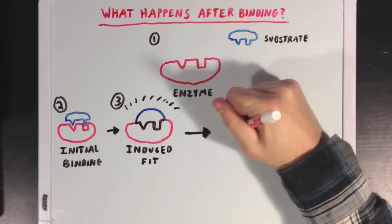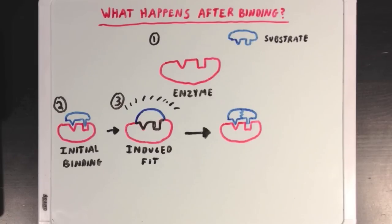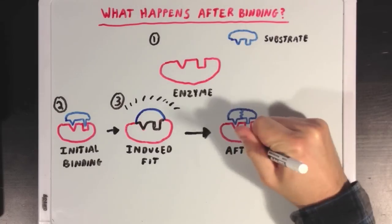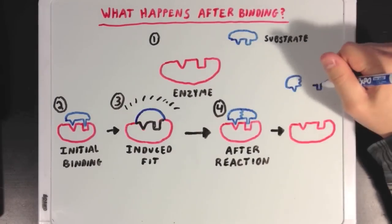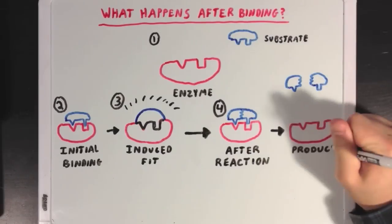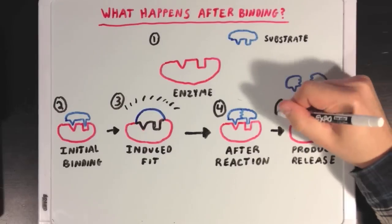Stage 4 occurs after the reaction is completed, and the binding becomes similar to what it was in stage 2. The difference here is that the substrate has changed — in this reaction, the enzyme is cutting the substrate into two parts, so now those two parts have become separated. Then in our last stage, stage 5, the products of the reaction have been released from the enzyme, and the enzyme is back in the same state it was in at stage 1.